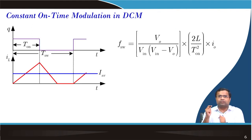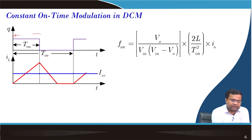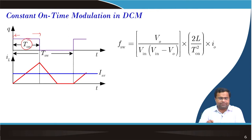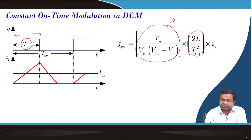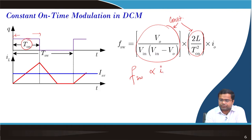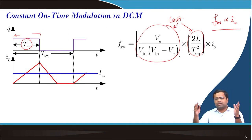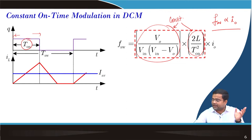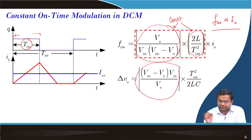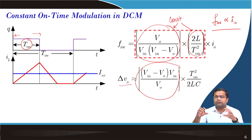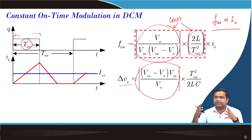To address this, constant on time control keeps the on time fixed. Since inductor value and input/output voltages are constant, it can be shown that switching frequency is linearly proportional to load current. So as load current decreases, switching frequency decreases and efficiency improves. Additionally, the output voltage ripple is more or less insensitive to load current, which is especially true when the converter operates deep into discontinuous conduction mode.